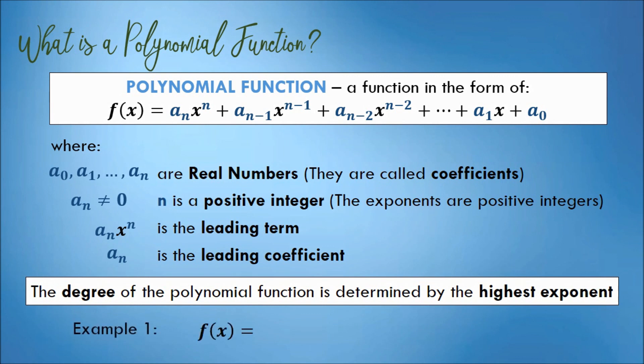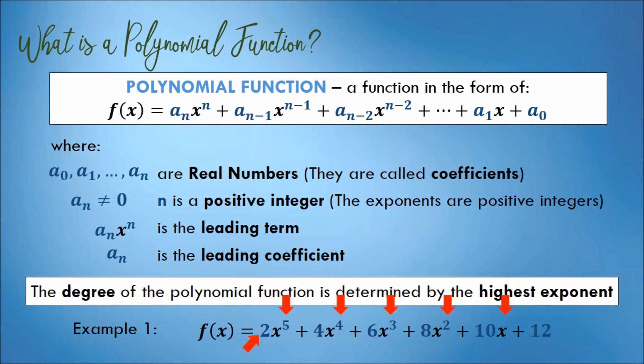For example, we have this function: f(x) = 2x raised to 5, plus 4x raised to 4, plus 6x raised to 3, plus 8x raised to 2, plus 10x, plus 12. This is a polynomial function because all exponents are positive integers and the leading coefficient is not equal to 0. The leading term is 2x raised to 5, because it has the highest exponent. The degree of this polynomial function is 5.